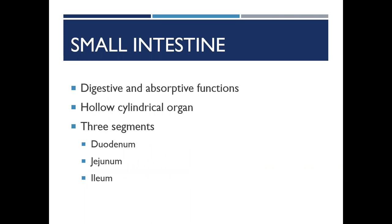The small intestine has digestive and absorptive functions. Intestinal juices and bile from the liver, gallbladder, and pancreas mix with the chyme for digestion and absorption of nutrients. It's a hollow cylindrical organ approximately 18 to 21 feet in length and contains three segments. The first segment is the duodenum, which begins at the pyloric sphincter. The duodenum has two functions: hormones are secreted to trigger the pancreas to release pancreatic juices and bile, and it secretes chemicals that neutralize the acidity of the chyme from the stomach before it reaches the jejunum.